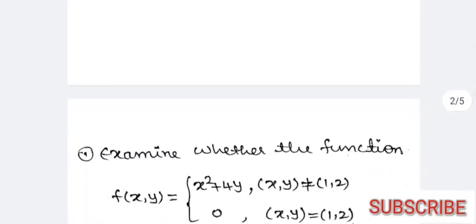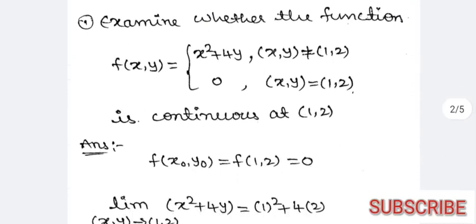In this video I will explain two problems, and then give one homework problem for you to try. This method is very important because this type of problem will definitely come in the examination. Examine whether the function f(x, y) = x² + 4y, when (x, y) ≠ (1, 1), and 0 when (x, y) = (1, 2), is continuous at (1, 2).